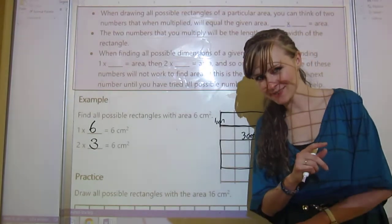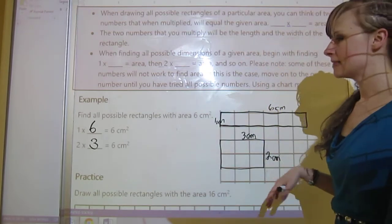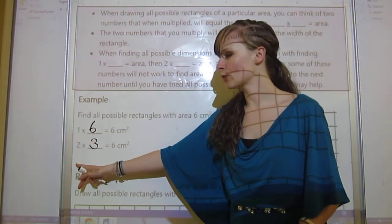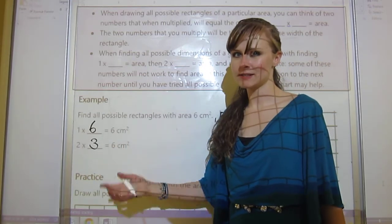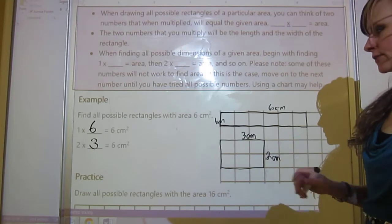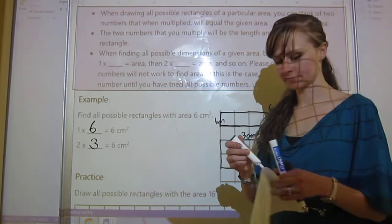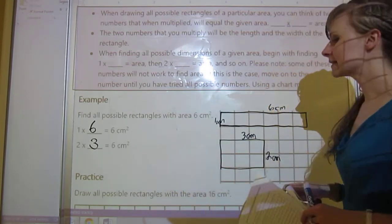I can draw that. I go 2 down and 3 across. I label 2 and 3, and those are both centimeters. We don't really need to do 3 because it's right here, so that tells me that I'm done. There are two possible rectangles for 6, and they are right there.